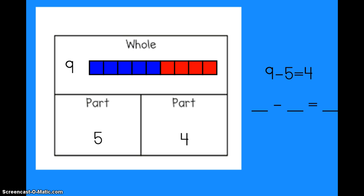Let's try one more. Take a look at this part-part-whole mat. You see that I started with nine as my whole. I have five as one of my parts and four as the other part. I wrote the subtraction sentence: nine minus five equals four. I'd like you to write the other subtraction fact for this part-part-whole mat. Remember, I always have to start my subtraction sentence with the whole. Good luck!